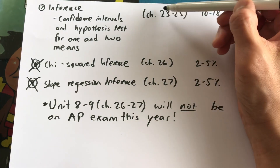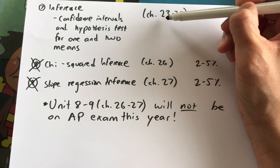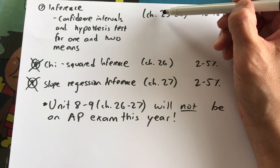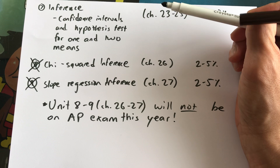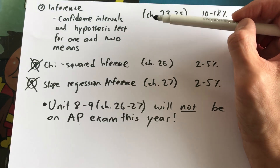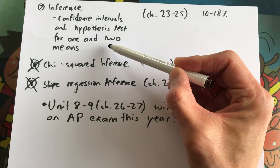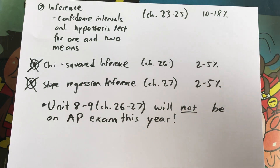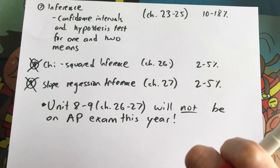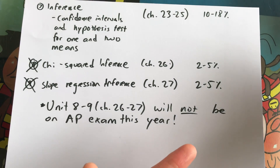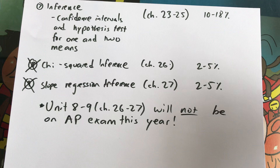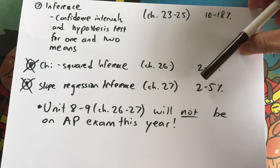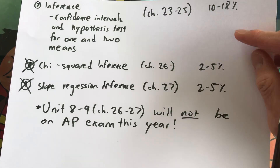We haven't quite finished unit 7 yet — chapter 23 will be your quiz on Monday, March 23rd. After that we'll do chapters 24 and 25, which cover two means. Units 8 and 9 — chapters 26 and 27 — we're not doing at all. This is actually good news because we'll have a lot more time to cover things without rushing through material. Please share this information with your friends and family. Thank you.